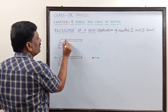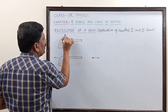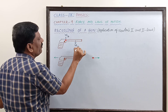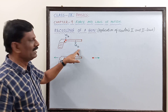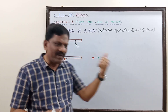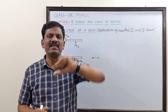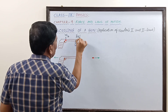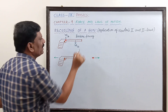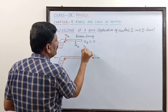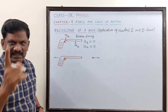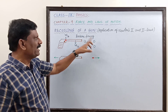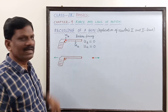In the first picture, a bullet is kept inside a gun. The red shot is the bullet, and its mass is M_B (mass of bullet). The gun has a mass M_G (mass of gun). Before firing the bullet, both the bullet and the gun are at rest, so the initial velocity of the bullet is zero, and the initial velocity of the gun is also zero.